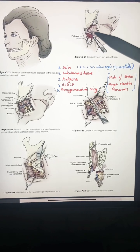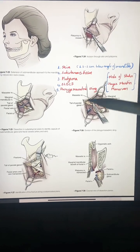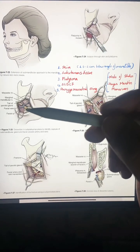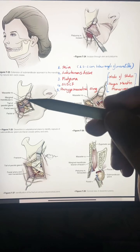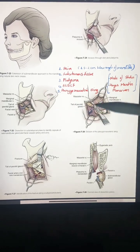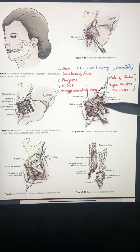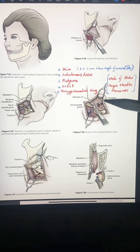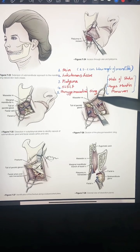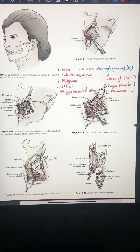Next, you encounter the platysma, which you incise through to reach the superficial layer of the deep cervical fascia. This is the most important area, as herein lies the submandibular gland, the facial artery, the facial vein, and the marginal mandibular branch of the facial nerve.